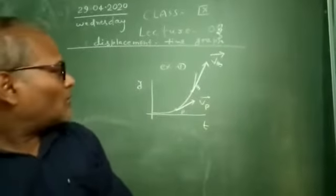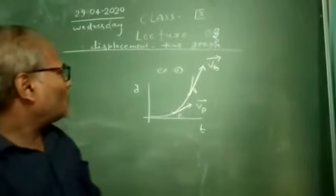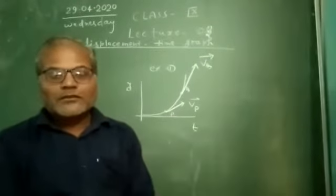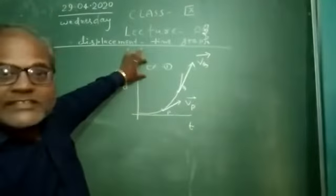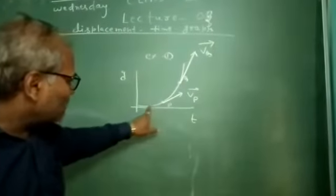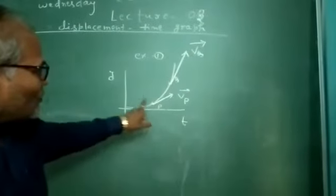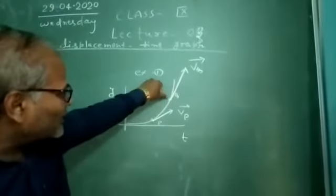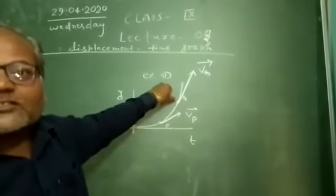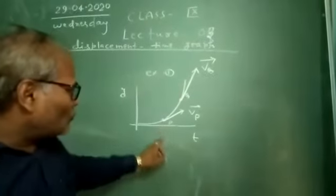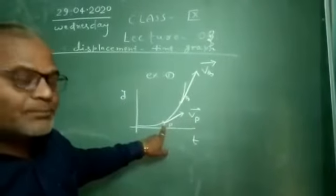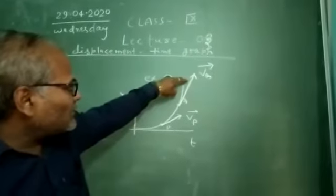In the previous class we already discussed velocity in a displacement-time graph. In this example, we comment on the given graph. For this, we take two points P and Q. In a displacement-time graph, to get the vectorial direction of velocity we draw the tangent. This tangent represents the velocity of a body at point P, and it will represent the vectorial direction of velocity at point Q.